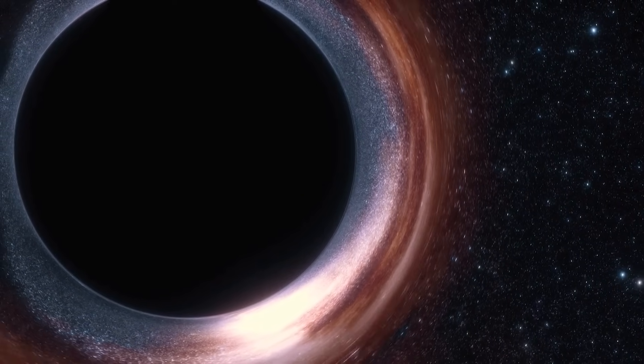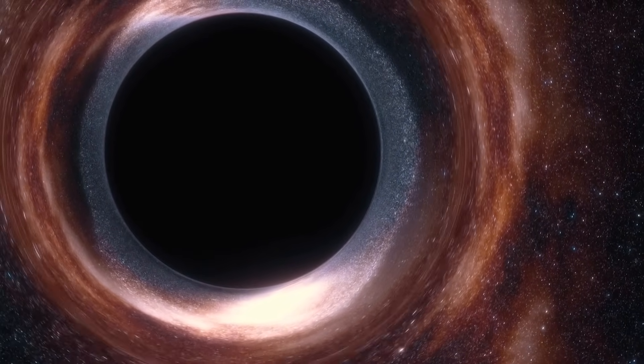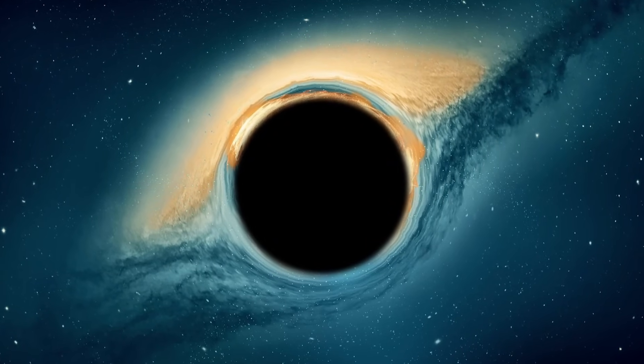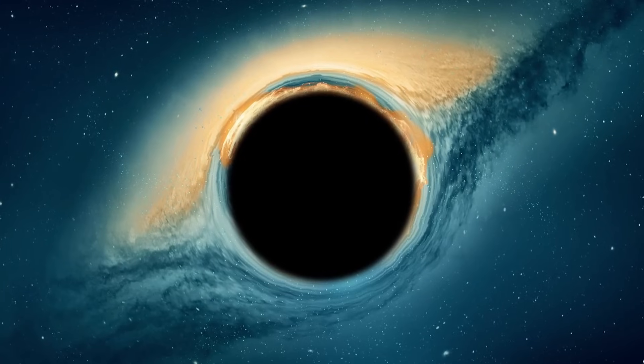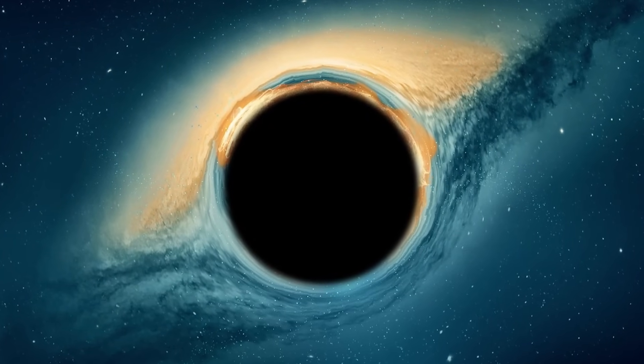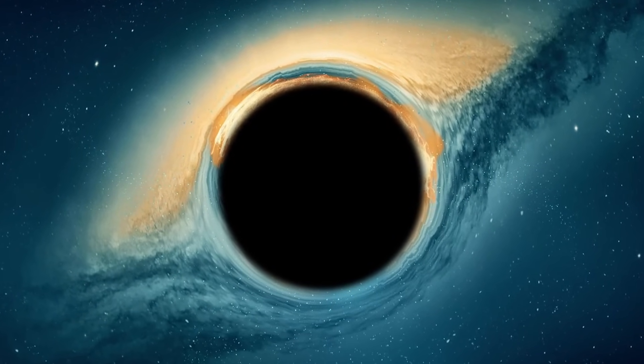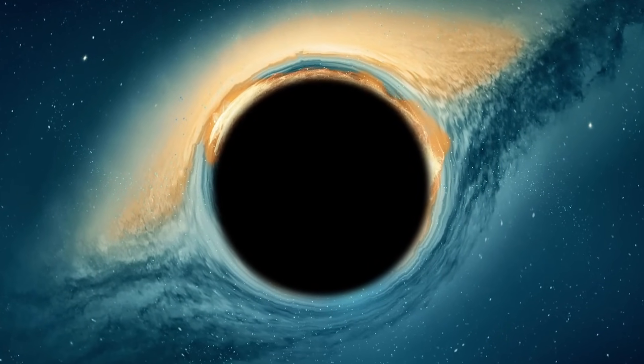As we well know, black holes possess extremely powerful gravitational force that even light cannot escape. However, in the vicinity of a black hole, one often finds a spinning disk of material, such as gas or dust, concentrated by its immense gravity. This material heats up as it spirals towards the black hole, emitting X-rays and other types of radiation, creating a luminous ring known as a corona.